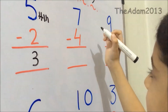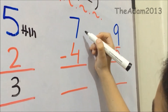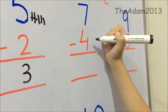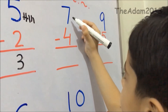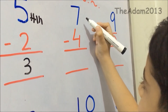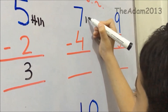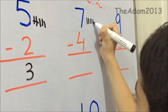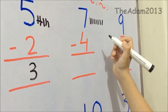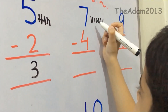Friends, here 7 lines we have to write. Here 4 lines we have to write. Friends, you will cut 4 lines.